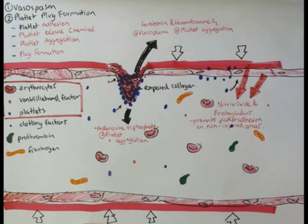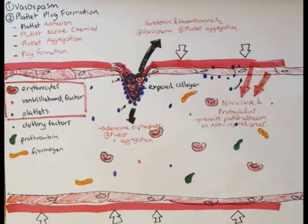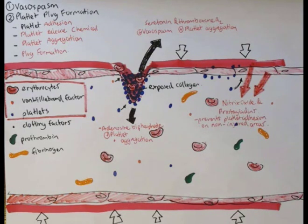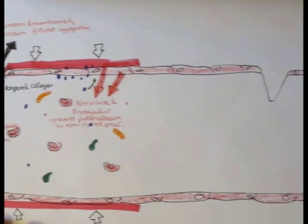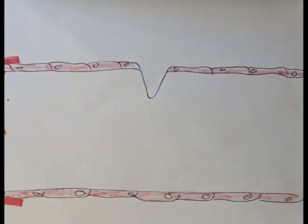The platelet plug formation step enables platelets, the thrombocytes, to form the plug to stop bleeding. But other processes are needed to strengthen and reinforce the plug so that it doesn't break apart again later on. So that's where clotting comes in, or coagulation, which is our third step in hemostasis.